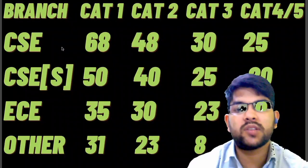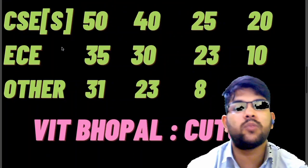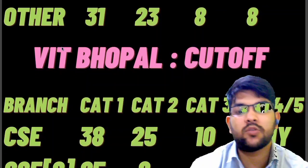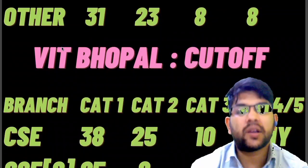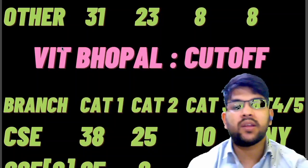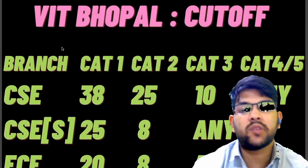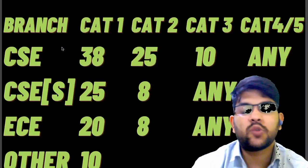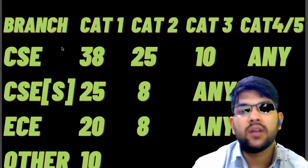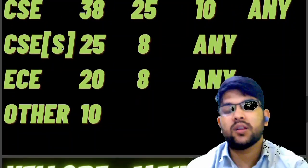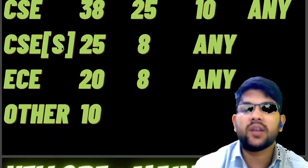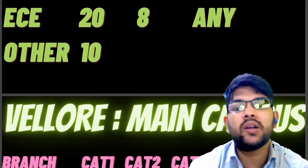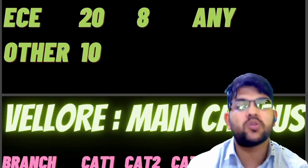For VIT Bhopal campus: CSE requires 38, 25, and 10 marks for Category 1, 2, and 3 respectively — for Category 4 and 5 you can get at any rank. For CSE specialization: 25 for Category 1 and 8 for Category 2. For EC: 20 marks for Category 1 and 6 for Category 2. For other branches you can get in at around 10 marks for Category 1.